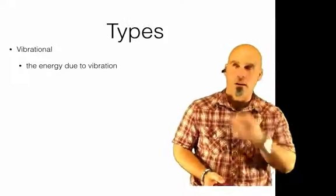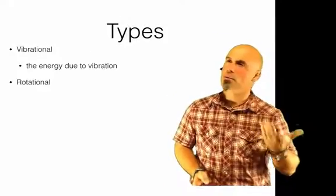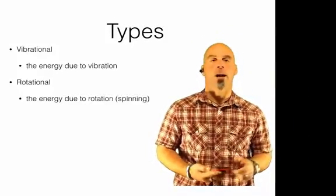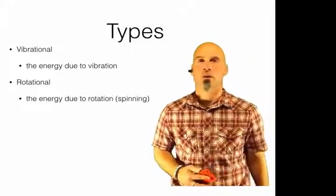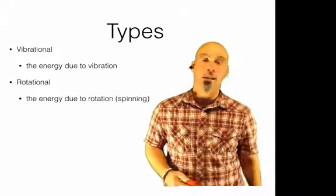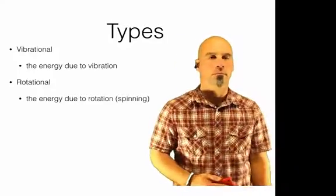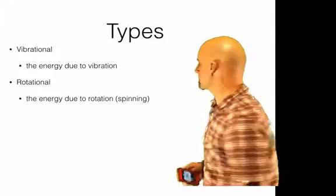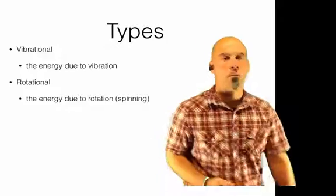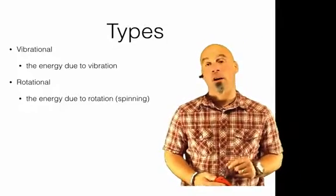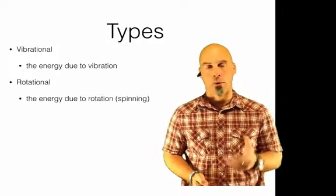Second one is rotational. I wonder what this one does. Yes, it's the energy due to rotation, spinning. So spinning might look something like this, or the other way. Rotational kinetic energy might be a good example of, say, a bicycle or a car tire, a car wheel.